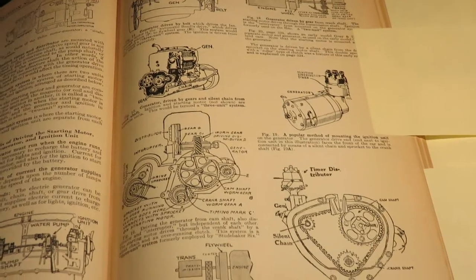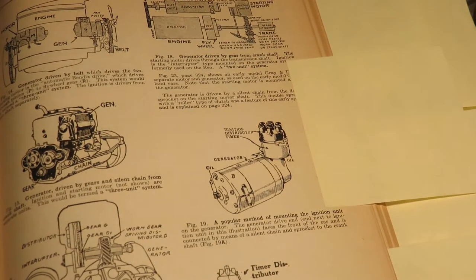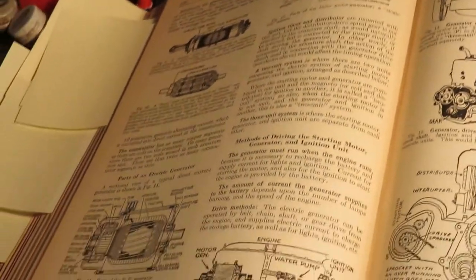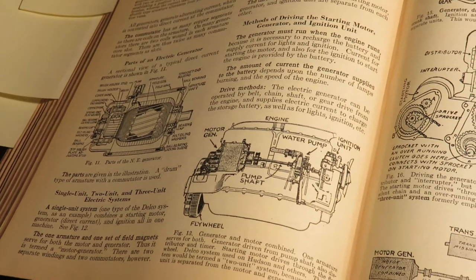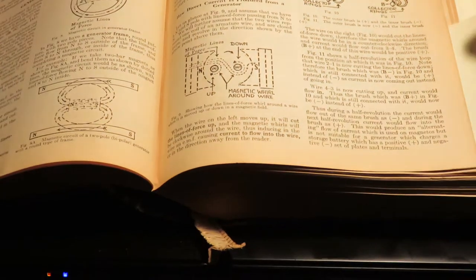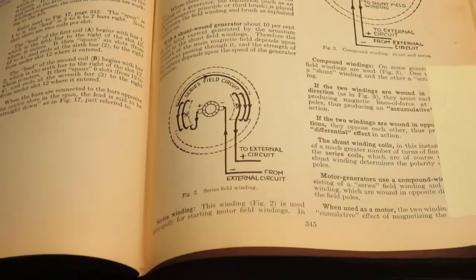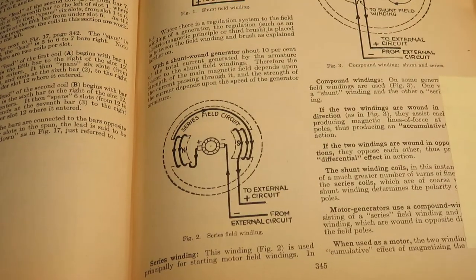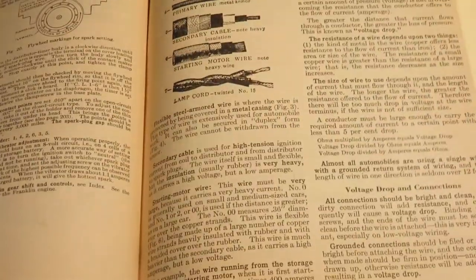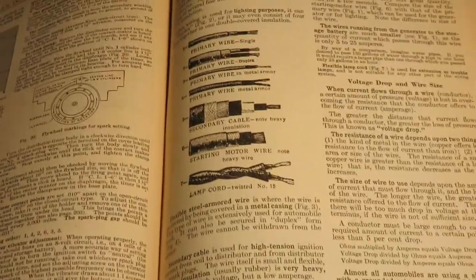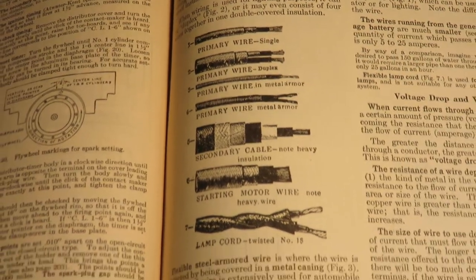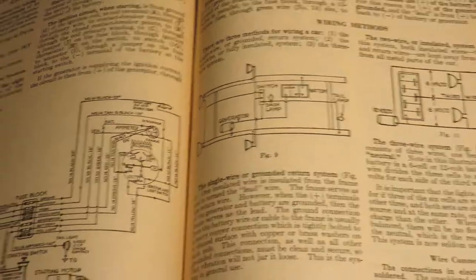Here's some cool illustrations here about the generators, and right there you have a distributor too. It's on the generator. This is about generators, field windings, and regulators. This here is about wiring. Let's see if we get a little bit closer. Illustration of some of those old cloth-covered wires. Here's some schematics.